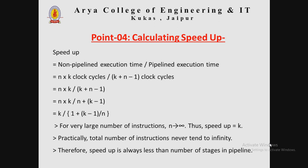The speed up is calculated as non-pipeline execution time divided by pipeline execution time: S = (N × K) / (K + N − 1). Simplifying gives S = K / (1 + (K − 1)/N). For a very large number of instructions, as N tends to infinity, the speed up approaches K. In practice, since N never truly tends to infinity, the speed up is always less than the number of stages K in the pipeline.